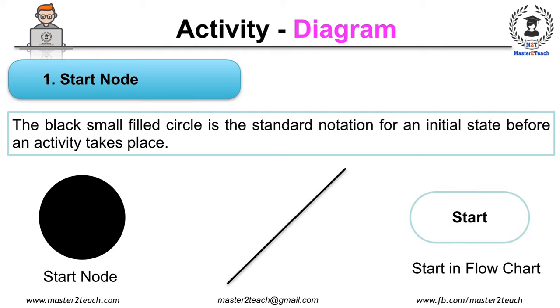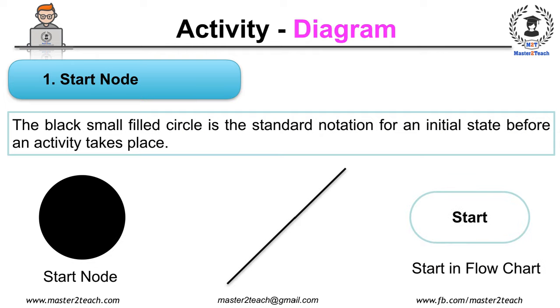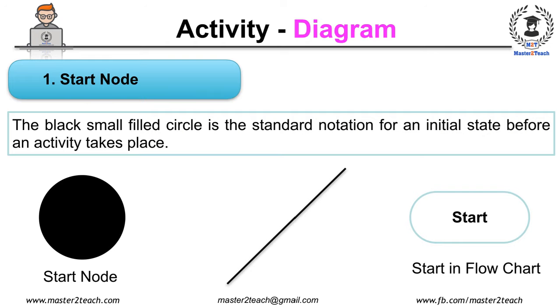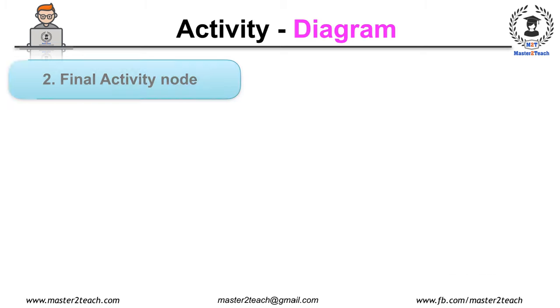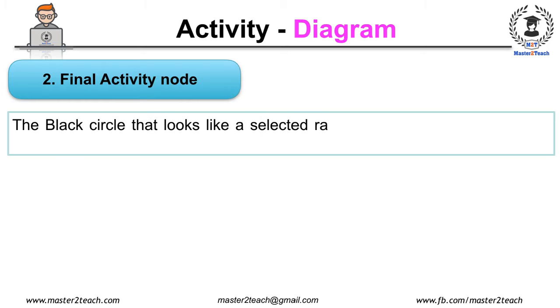Whereas in the activity diagram we draw with a small circle as shown in the diagram to represent the start of the activity. Final Activity Node: the black circle that looks like a selected radio button is the symbol for the end stage of activity.